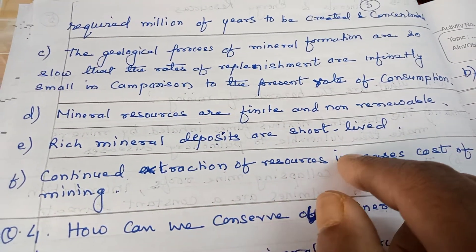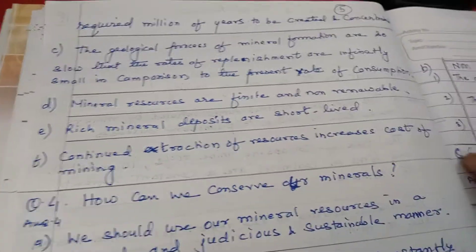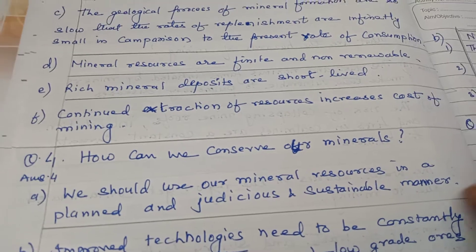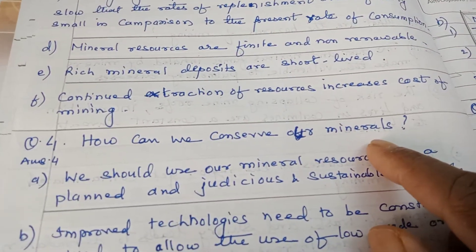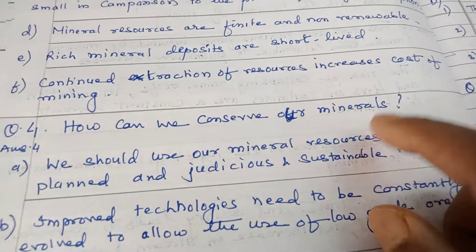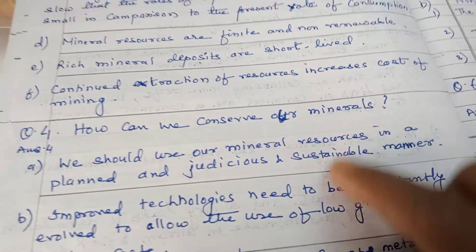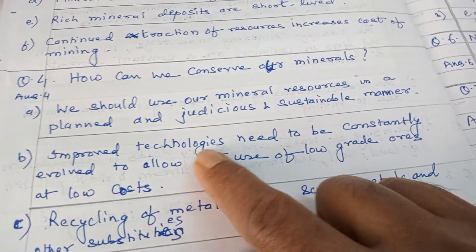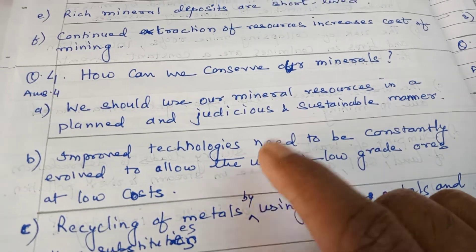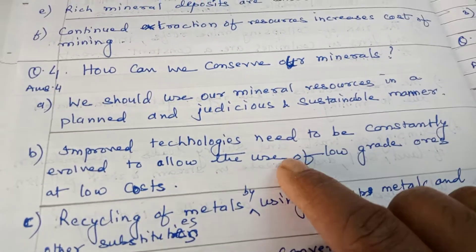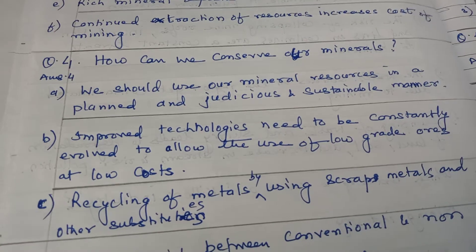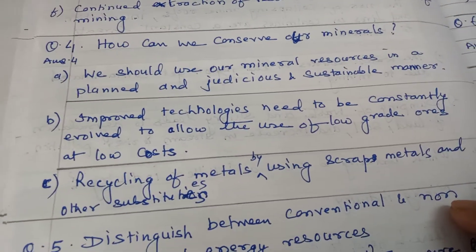Continued extraction of resources increases the cost of mining. If you go deeper and deeper for extraction of minerals, the cost of extraction will be higher. We should use mineral resources in a planned, judicious, and sustainable manner so that we use minerals for the present generation while keeping in mind the future generation. Improved technologies need to be constantly evolved to allow the use of low-grade ores at low cost, since most industries currently use only high-grade ores.